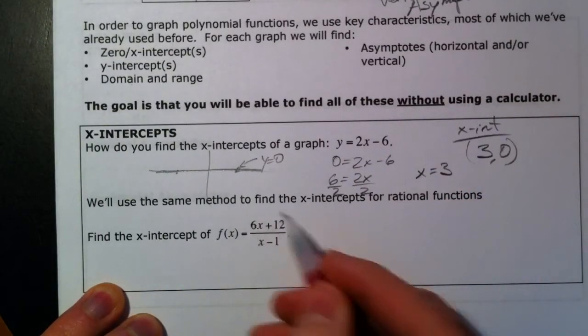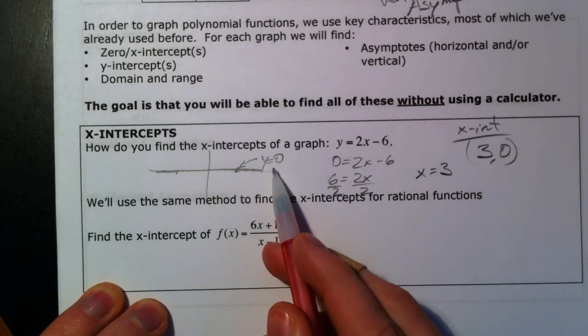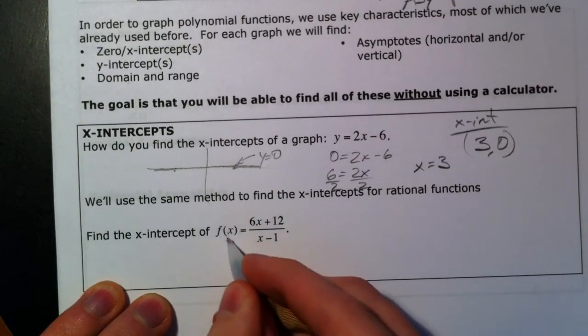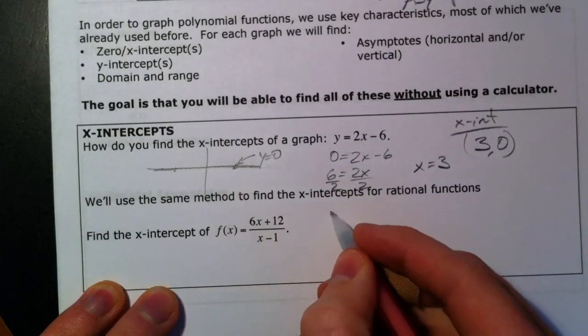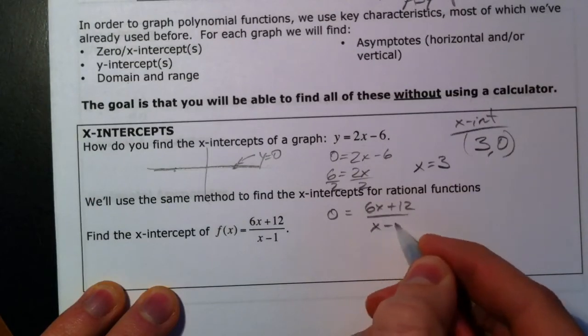So we're going to do the same thing here to find the x-intercept of a rational function. We're going to plug in 0 for y. So f of x, remember, is the same thing as 0. So I'm going to say 0 equals 6x plus 12 over x minus 1.